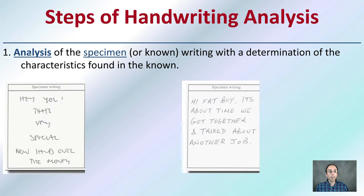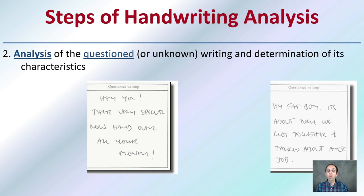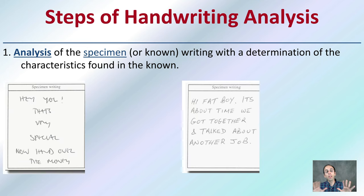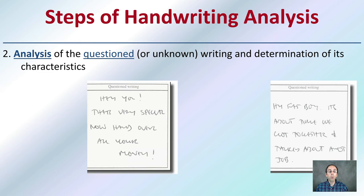Now, steps of handwriting analysis, we'll want to analyze the specimen or the known writing with a determination of the characteristics found in the known. That's that specimen writing. We know who made that. So that's our source of comparison. We then also have the questioned or the unknown. We want to analyze that and determine some of its characteristics. So we have to go back. We have that first, we analyze what we know from the known author and we have that questioned writing. We want to do the same steps of going through and analyzing that handwriting.